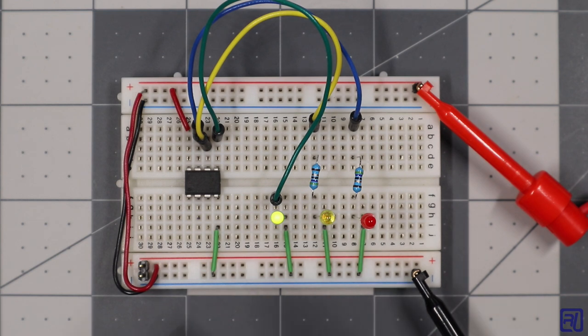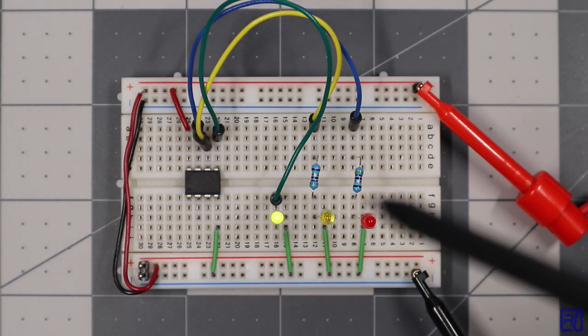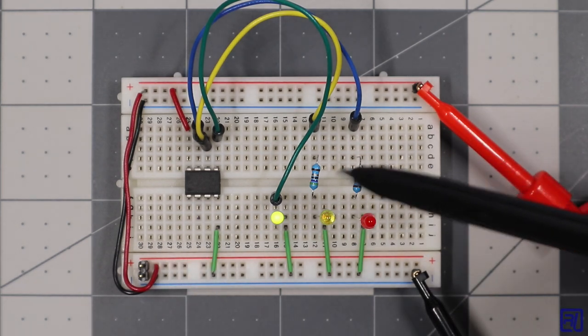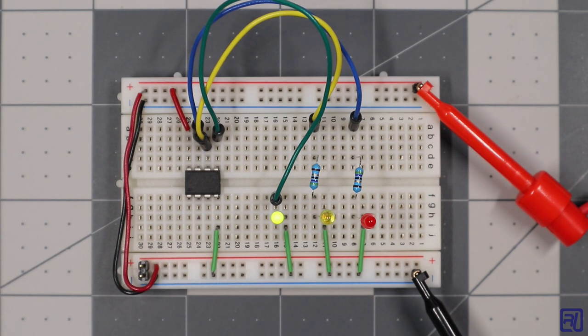Here it is on a breadboard. Right now it's getting power off my bench top power supply. The green LED connects to PB0. The yellow LED connects to PB1, and that's using a 48 ohm resistor to drop the voltage to a safe level.